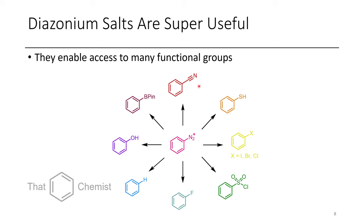You can access nitriles, thiols, halides, sulfonyl halides, fluorides. They can be reduced to hydrogens. They can be converted to phenols. And they can also be converted to boron-containing species.